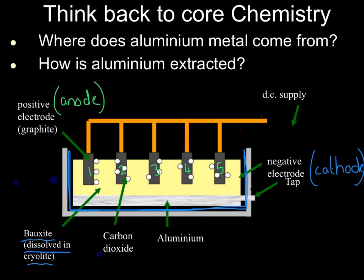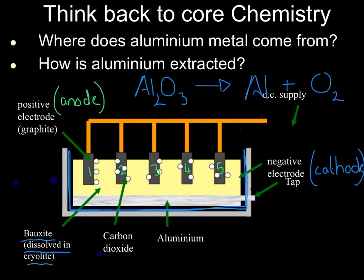We're going to fill in the overall reaction. We have aluminium oxide being converted — as we learned before — to the metal, and we get the non-metal gas. To balance: I'll put a 3 in front of O₂ to give 6 oxygens, a 2 in front of aluminium oxide to give 4 aluminiums and 6 oxygens, and a 4 in front of aluminium. Before we leave it, we add state symbols: aluminium oxide is molten, aluminium is solid, and oxygen is a gas.